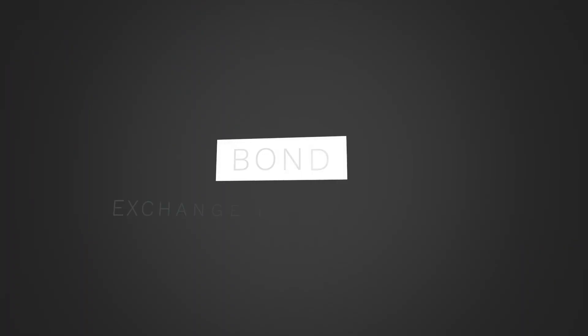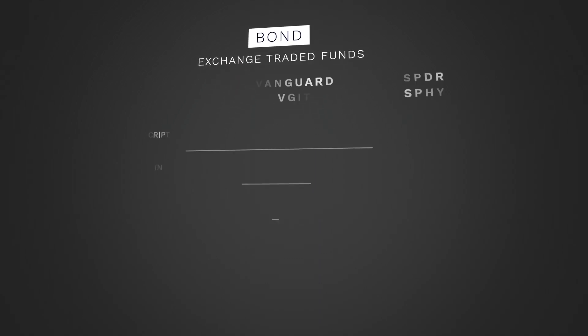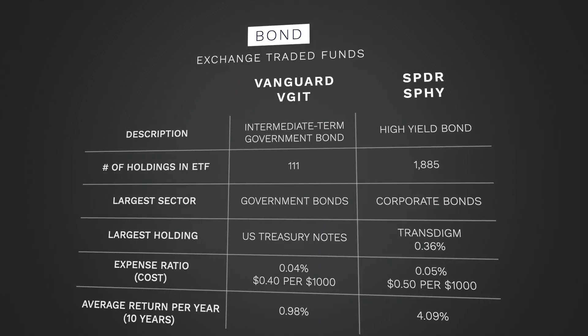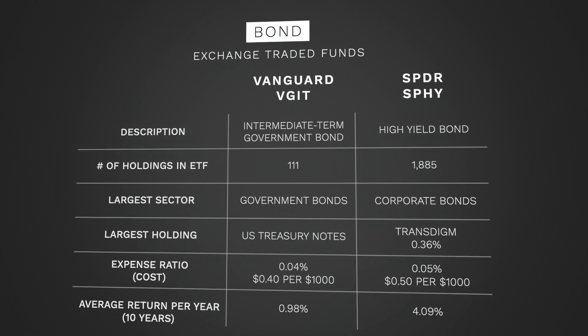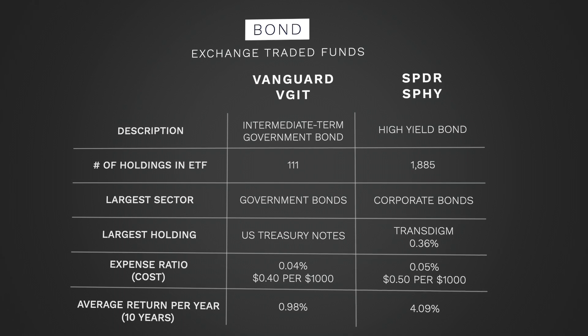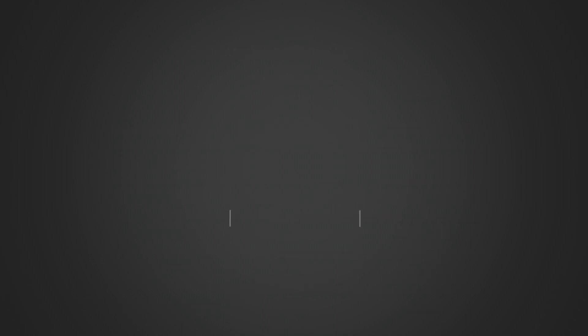Another type of ETF is Bond ETFs. Typically, bond ETFs won't impress with returns, but in normal times they are much more stable and will produce consistent returns. In my opinion, this would be an option for someone who has a short-term goal where funds will need to be liquid within a not-too-distant window. A couple of bond ETFs are Vanguard's VGIT and Spyder's SPHY. SPHY is a high-yield bond, so you'll typically get a higher return, but there is a little bit more risk incorporated into that. These ETFs could also be compared with money market funds, which are structured a little differently.